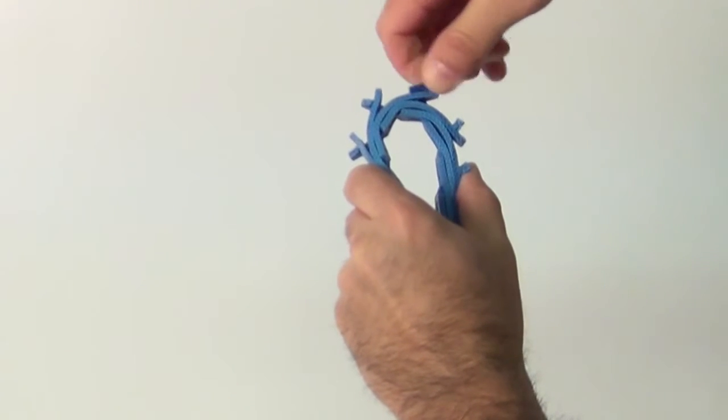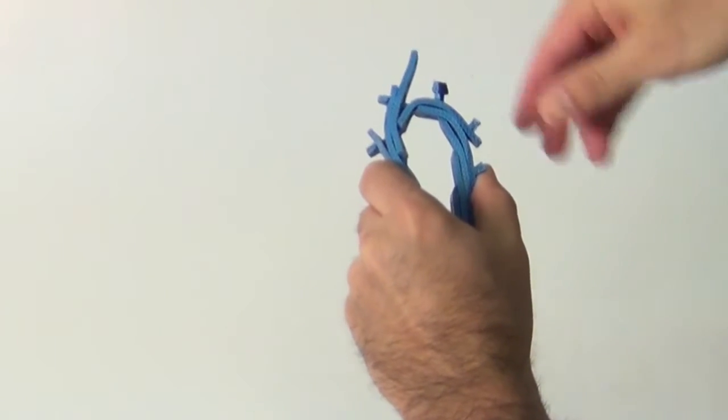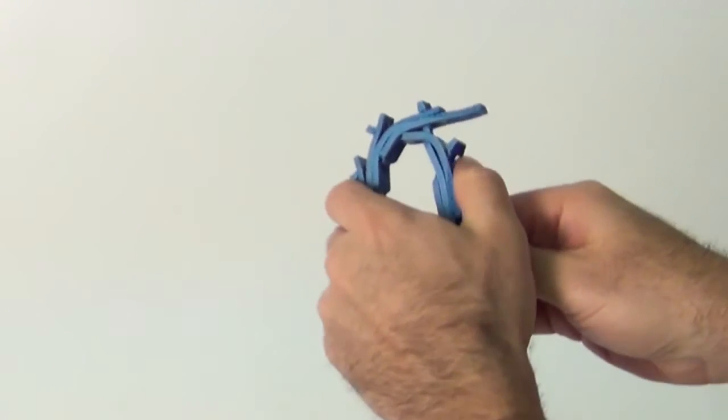Twist one tab 90 degrees parallel with the slot. Pull end of link over tab. Repeat with the second tab.